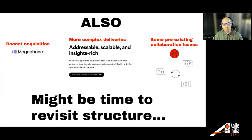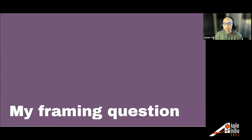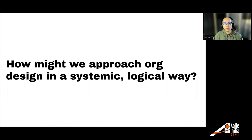These types of problems aren't always structural issues, but have at least indicated that there might be some mysteries with boundaries and how we work together across them. So the framing question I was asking, given this context, was: how might we approach org design in a more systemic, logical way?